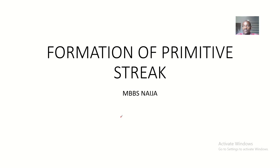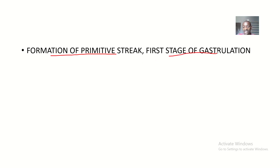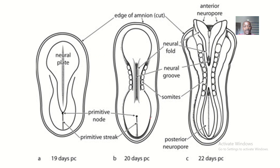The primitive streak is an interesting concept in embryology. We'll be talking about the formation of this primitive streak, which we spoke about when discussing sacrococcygeal teratoma — where we said the embryological basis for sacrococcygeal teratoma is basically remnants of the primitive streak. The formation of the primitive streak is actually the first stage of gastrulation.